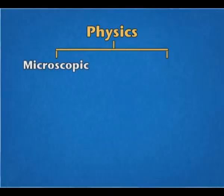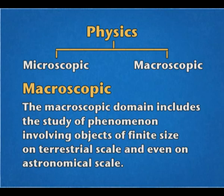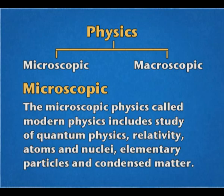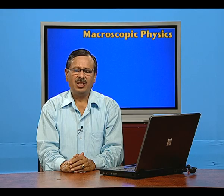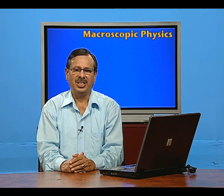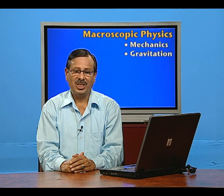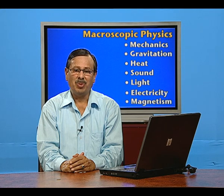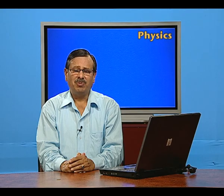There are two types of domains which are the interest of physics: microscopic and macroscopic. In the macroscopic domain, we study phenomena involving objects of finite size, or terrestrial size, or astronomical scales, and this model is known as classical physics. In microscopic, we learn about very, very small particles like elementary particles, theory of relativity, atoms, nuclei, and other particles. Classical physics, developed up to the year 1900, includes the study of mechanics, gravitation, heat, sound, light, electricity, and magnetism. When we talk about microscopic, we study quantum physics and the theory of relativity.